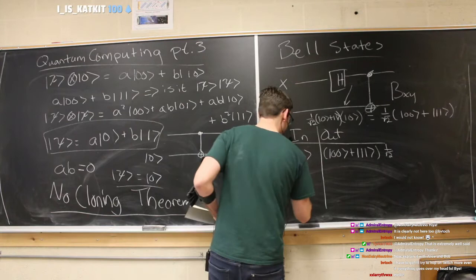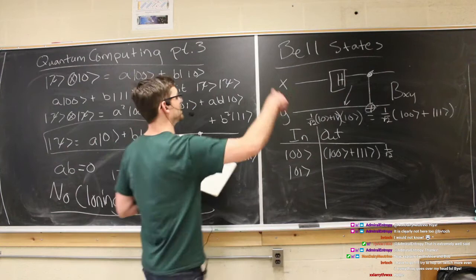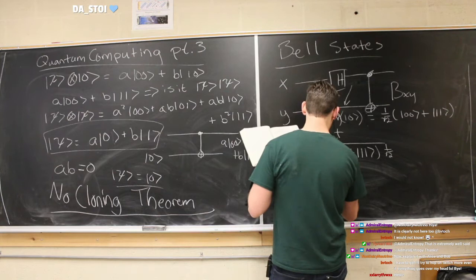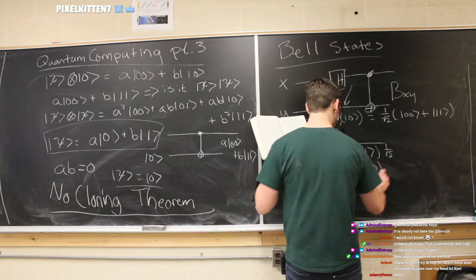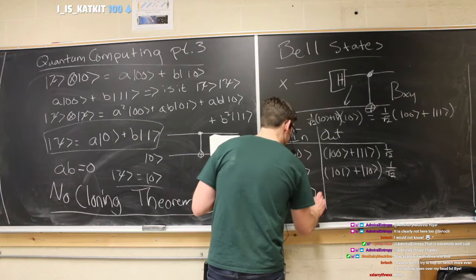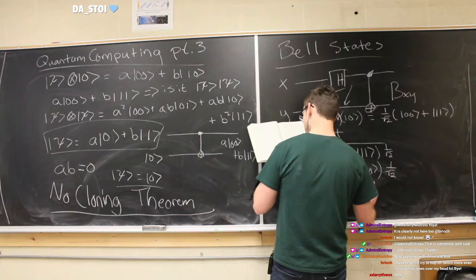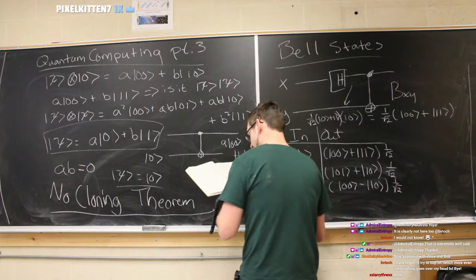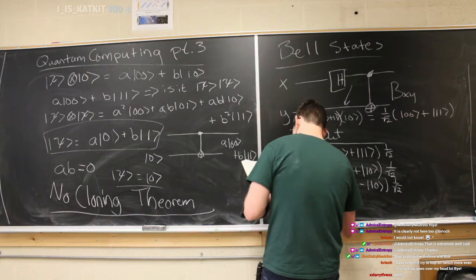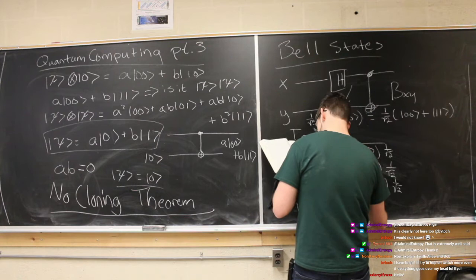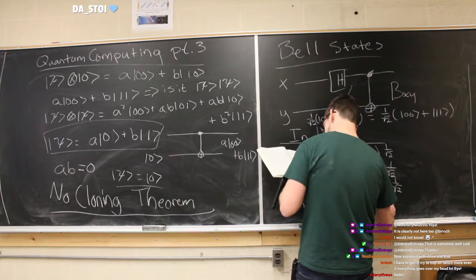Now zero-one: the same thing happens — the zero goes through and gets superimposed, and the output will be slightly different. We'll have the states (1/√2)(|01⟩ + |10⟩). Then for one-zero as input, the output is going to be (1/√2)(|00⟩ - |10⟩). And for input one-one, the Hadamard adjusts it appropriately, and we get (1/√2)(|01⟩ - |11⟩).